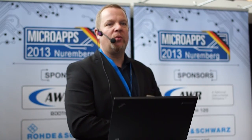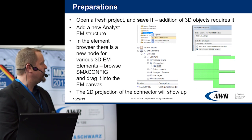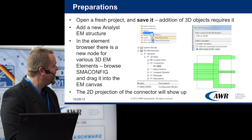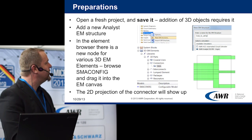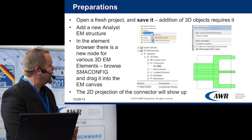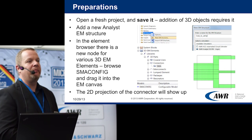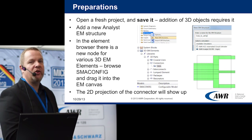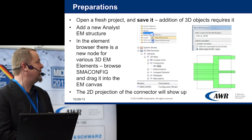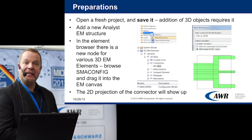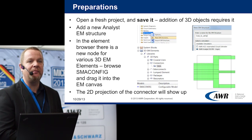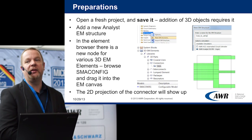In practice, when you work with the AWRDE design environment, there are some preparations that you need to do. When you open a new EM structure, you now have access to the 3D FEM solver. New in version 11 of AWRDE is that in the element browser, there is a new node for a number of 3D EM elements. In this case, just browse the connectors, SMA, and find an element called SMA config, and drag it into the EM canvas.